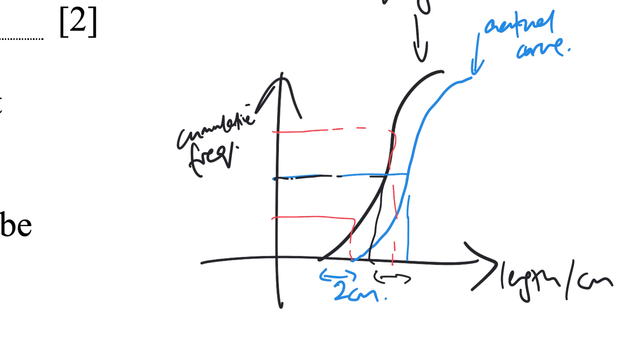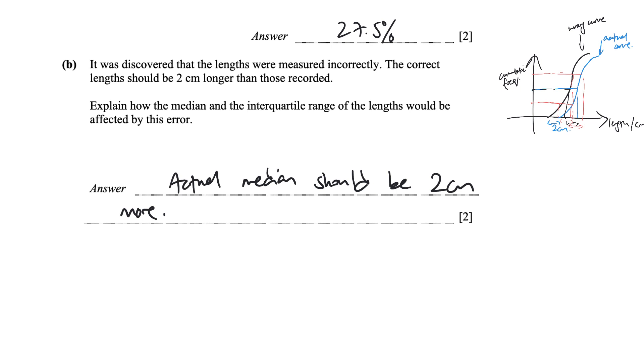Both of them will increase by 2 cm. But so as a result the interquartile range has no change. Because both your upper quartile and your lower quartile also increase by 2 cm. So interquartile range has no change.